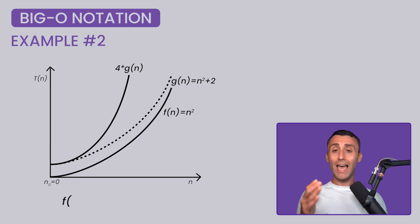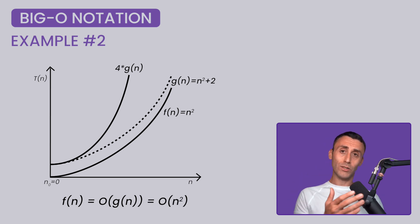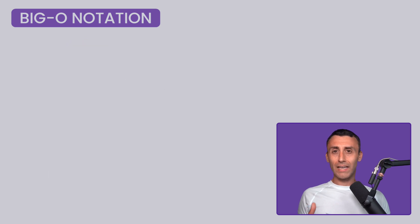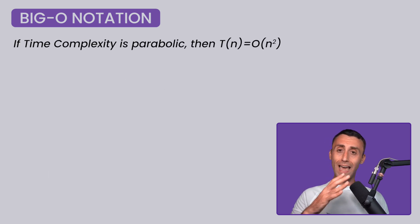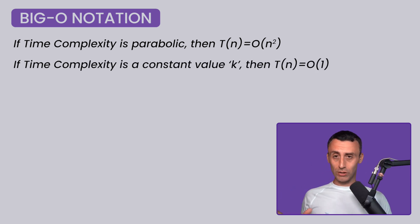So in big O notation, f of n equal O of g of n or f of n equal O of n squared. You got the concept here. If the time complexity of any function is a parabolic function of the input size n, then we can say that the time complexity in big O notation is O n squared.